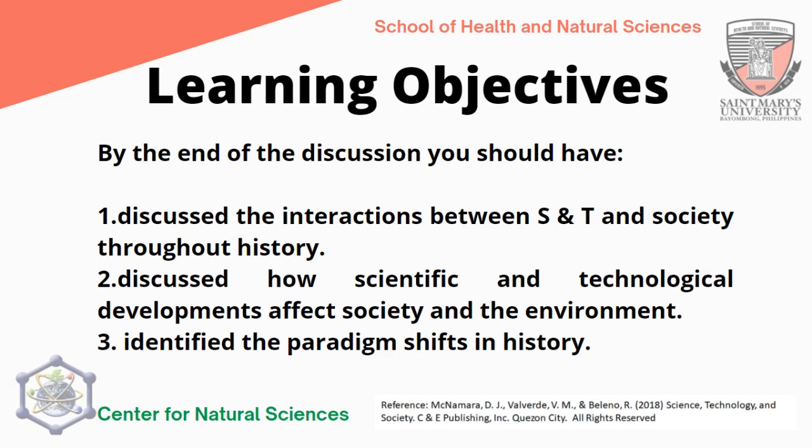So last time, we already finished the different ancient civilizations such as the Sumerian, Babylonian, Greek, Roman, and Chinese civilizations, including also the Egyptian. Now we proceed to another historical timeline in which science and technology progress throughout our time, affecting our society.